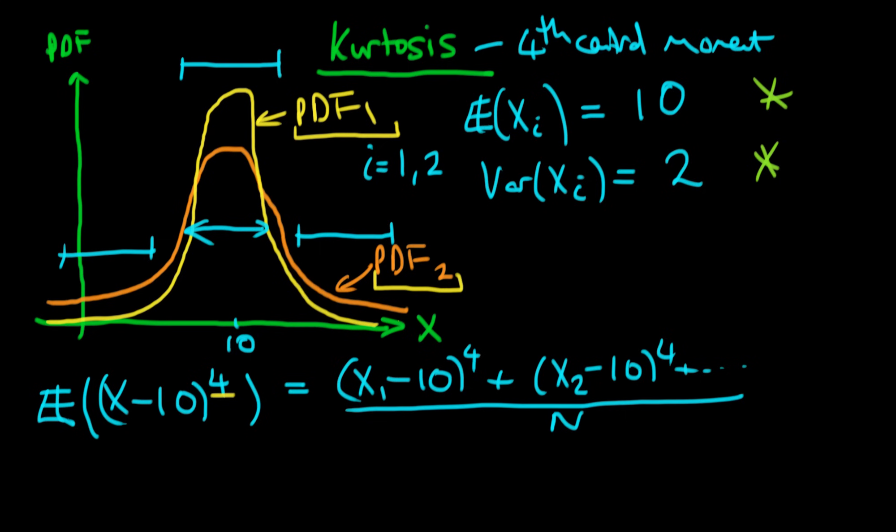But normally what we do is we actually refer to the kurtosis of a distribution, we call it sort of gamma, and we say well that's equal to the sort of fourth central moment of our variable X divided by our sort of standard deviation all squared, so that's now sigma to the power four. And the reason we do that is because we're interested in how spread our sort of variable is relative to its sort of standard deviation.